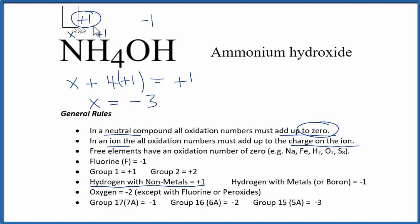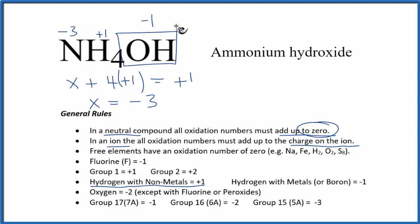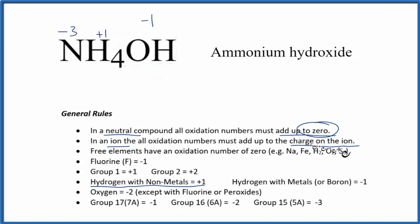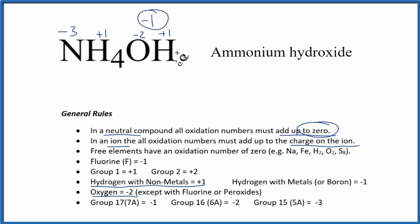So we write in minus three as the oxidation number on nitrogen. Next, looking at the hydroxide ion: the overall oxidation number equals the charge, so it's minus one. Oxygen has an oxidation number of minus two with just a few exceptions. Hydrogen bonded to nonmetals — and oxygen is a nonmetal — is plus one. Minus two plus one gives us minus one, so those are the correct oxidation numbers for oxygen and hydrogen.